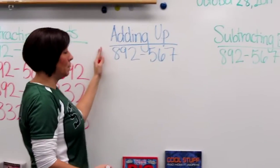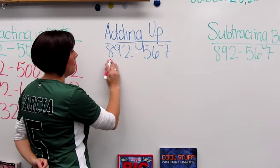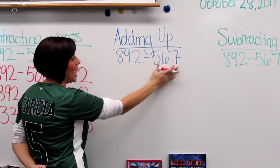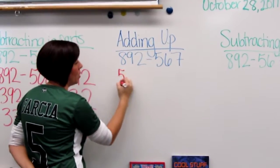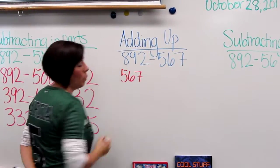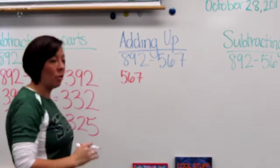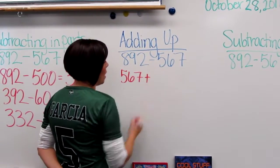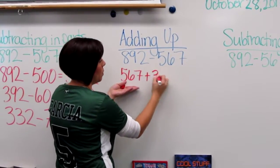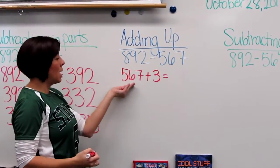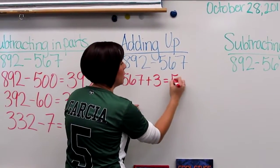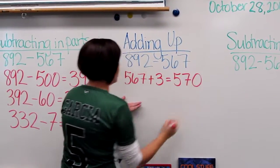Adding up, I start by taking my problem, 892 minus 567. I start with my lower number, 567. And what I'm going to do is I'm going to be adding up until I get to 892 and then I'll add up my total for those numbers that I added. So 567, I always start simple with the ones place. In order to get up to an even number, 567 plus 3 gets me to 570.